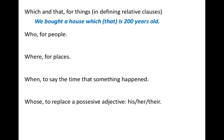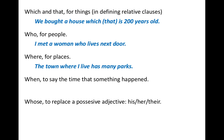Let's see an example for who: 'I met a woman who lives next door.' We use who to replace 'a woman' in the relative clause. Separating them: 'I met a woman' is the first clause, and 'a woman lives next door' is the second clause. For where: 'The town where I live has many parks.' We use where to introduce the relative clause referring to a place — 'I live in a town' and 'the town has many parks.'